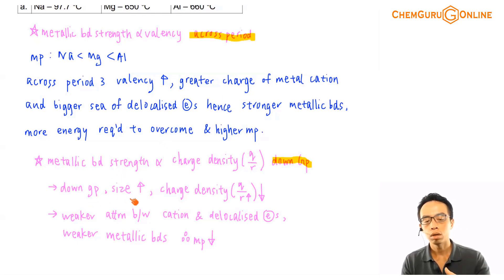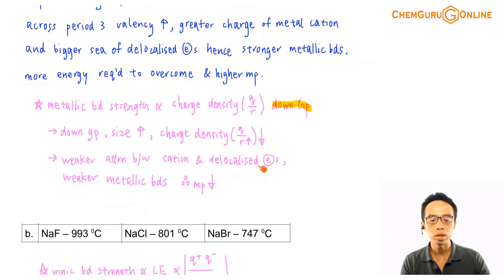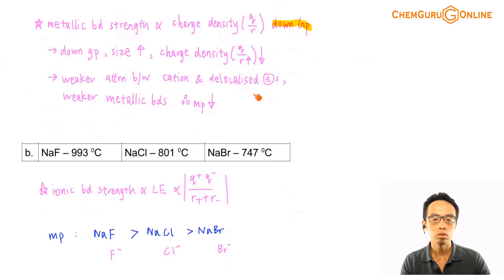So if I consider down the group, obviously if you have more principal quantum shell, the size will increase, charge density will decrease, because the denominator is bigger, right? So if the charge density decreases, the ability for this metal cation to go and attract your sea of delocalized electrons will weaken, so weaker attraction between your cations and your delocalized electrons, metallic bond will be weaker, the melting point will drop.